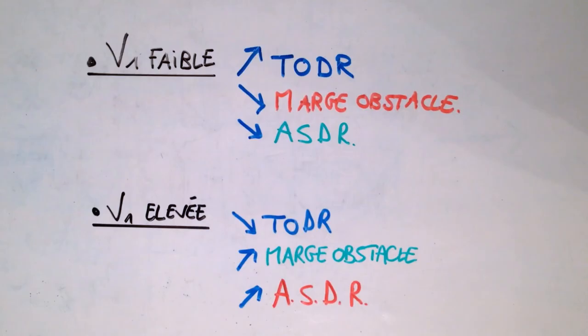So I have a little table to recapitulate. A V1 low, like we have seen, it increases our takeoff distance. It will reduce our obstacle clearance margin. However, what is positive is that it will reduce our stopping distance. So for the V1 high, it is exactly the opposite. So again, between the choice of a V1 low and a V1 high, it depends on the configuration of the terrain. And depending on the choice of V1, it will be more about the margin with a V1 high than with a V1 low, but with a better stopping distance with a V1 low.